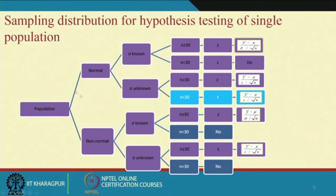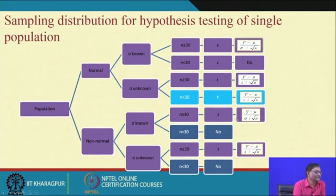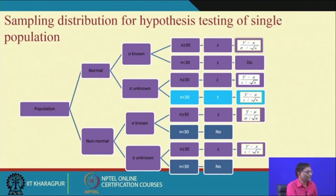This is similar to what we have seen under estimation. For a normal population with sigma known, irrespective of sample size, we use the z distribution: (y-bar minus mu) divided by (sigma over root n) follows z. If sigma is unknown and sample size is large, use z; otherwise use t. For a non-normal population with sigma known and large n, use z; if sigma unknown and large n, use z. If sample size is small and distribution is unknown, we cannot determine the distribution.